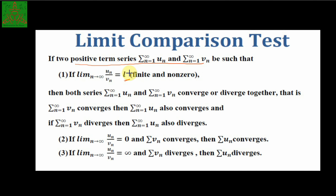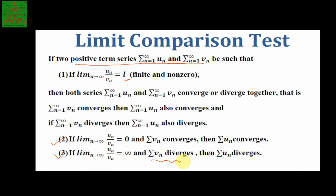...then the nature of summation of u_n and summation of v_n is the same: if v_n is convergent then u_n is convergent, if v_n is divergent then u_n is divergent. Additionally, if the limit equals zero and summation of v_n is convergent, then summation of u_n is also convergent. If the limit is infinity and summation of v_n is divergent, then summation of u_n is also divergent.